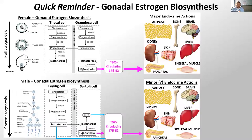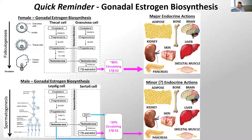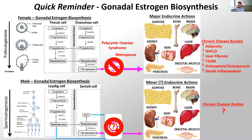About 80 percent of circulating beta-estradiol is created in the granulosa cells of the ovary in females, and this has major endocrine actions throughout the body. Males only produce about 20 percent of their circulating beta-estradiol in the Sertoli cells of the testes. In females, when you eliminate this 80 percent pool — in diseases such as polycystic ovarian syndrome or in menopause — this leads to chronic conditions such as obesity, liver disease, metabolic dysfunction, and osteoporosis.